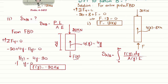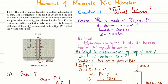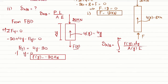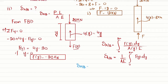Since the diameter of the post is constant at 60 millimeters, the cross-sectional area A is constant throughout. So we take 1 over A times E outside the integral, leaving the integral from 0 to 2 meters of Fy dy. The displacement of point A with respect to point B equals 1 over AE times the integral from 0 to 2 of Fy dy.